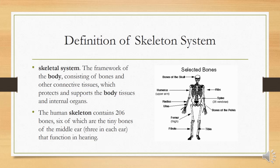The human skeleton system contains 206 bones, six of which are the tiny bones of the middle ear, three in each ear, that function in hearing.